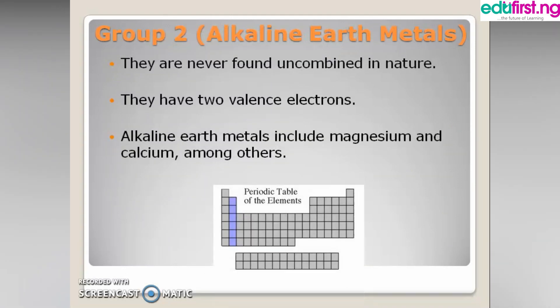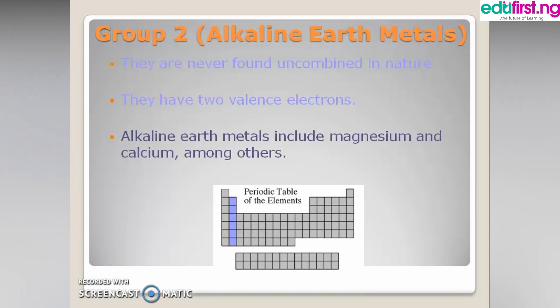Group 2 elements are the alkaline earth metals. They are never found free in nature and they also have 2 valence electrons in their outermost shell, which means the last shell carries only 2 electrons. Some of the elements in this group are magnesium and calcium.